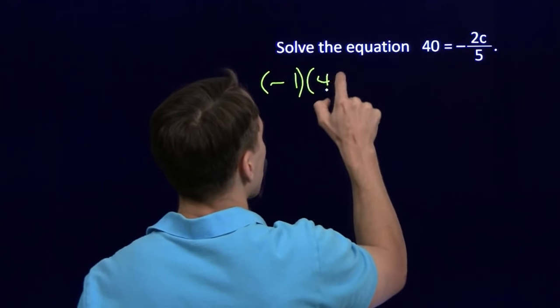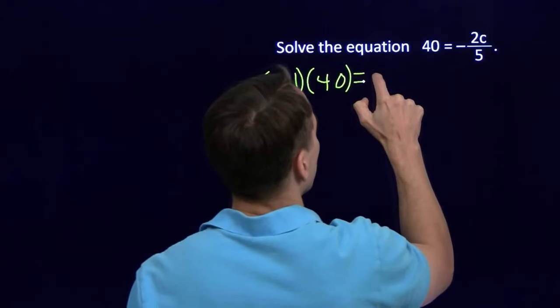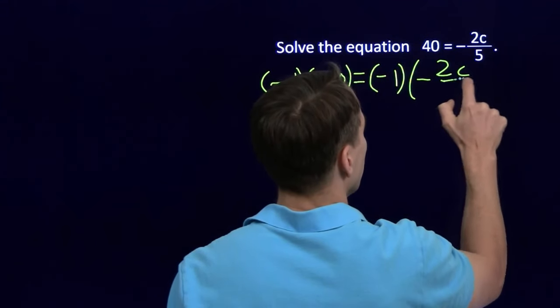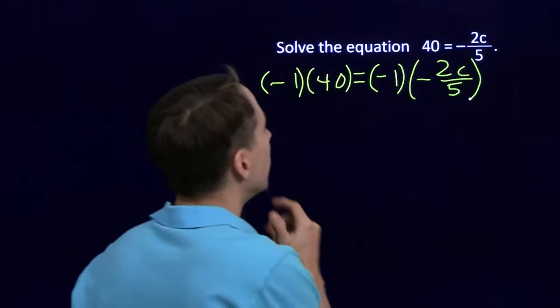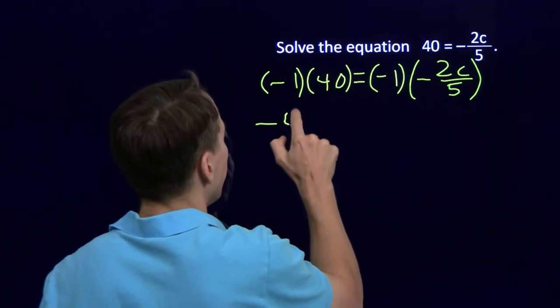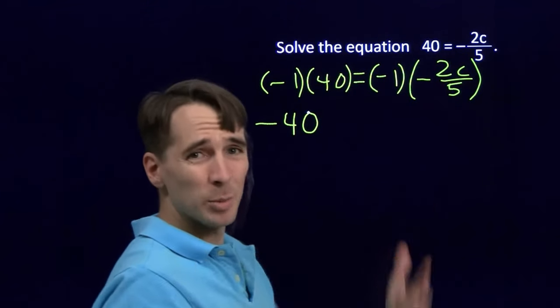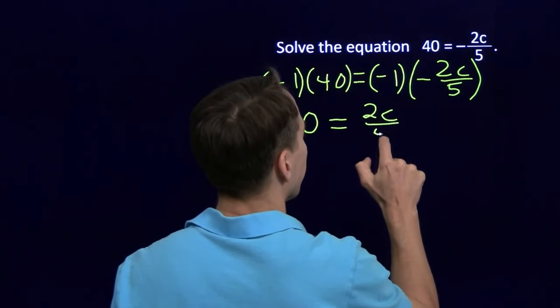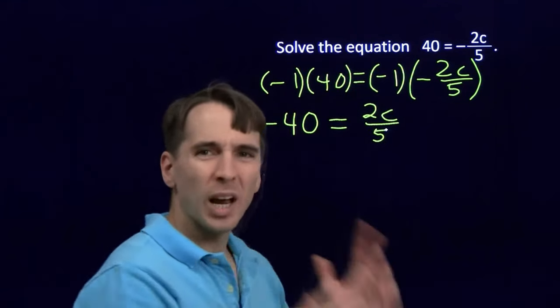We have negative 1 times 40 equals negative 1 times the negative 2c over 5. Now, that just gives us negative 40 over here. Negative times a negative, that's a positive. It gives me 2c over 5 here. At least we got rid of the negative.